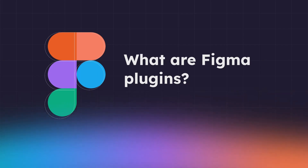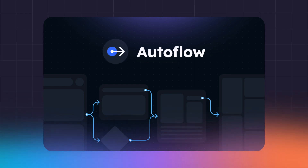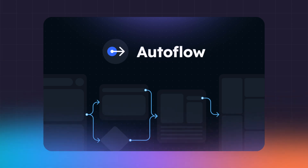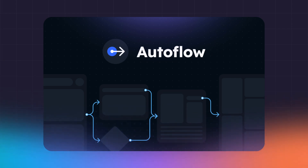Here are the 11 must-have Figma plugins for UI UX designers. First: Autoflow. Autoflow is a Figma plugin for designers to quickly create flow diagrams. It connects nodes across design frames automatically. The plugin analyzes objects on frames and intelligently draws connections between them based on positioning. Users simply drag objects like rectangles, circles, or images onto frames to represent different steps or nodes. Autoflow will then draw the connecting arrows and lines for you automatically. This saves designers immense time as they no longer need to draw connector shapes and lines, especially when iterating on flows. It also delivers a cleaner and more organized look than those drawn manually.